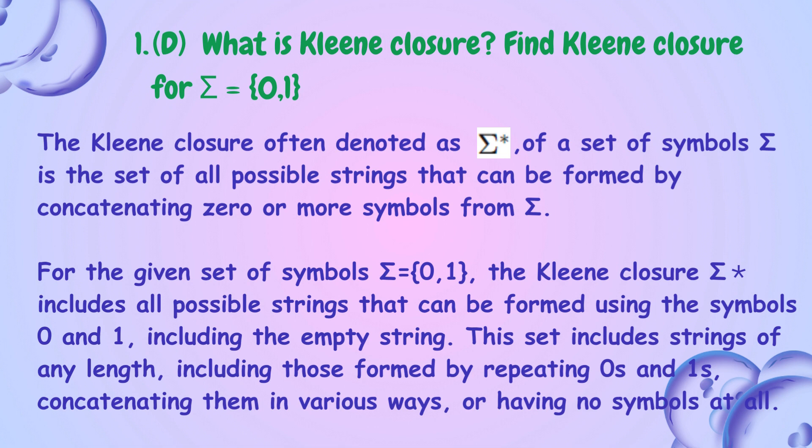What is Kleene closure? Find the Kleene closure for sigma equals {0, 1}. The Kleene closure, often denoted as sigma-asterisk, of a set of symbols sigma is the set of all possible strings that can be formed by concatenating zero or more symbols from sigma. For sigma equals {0, 1}, sigma-asterisk includes all possible strings formed using the symbols 0 and 1, including the empty string.